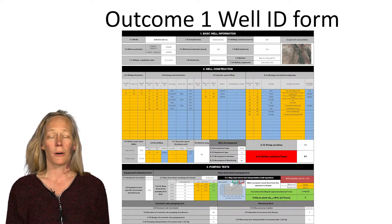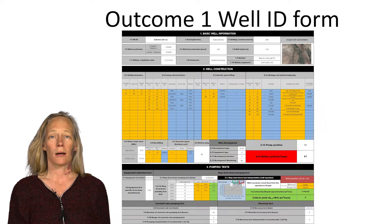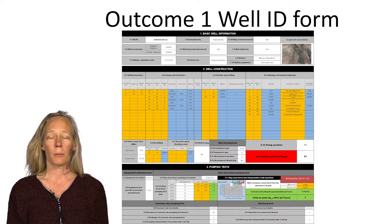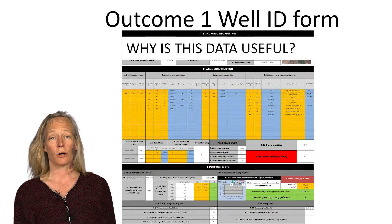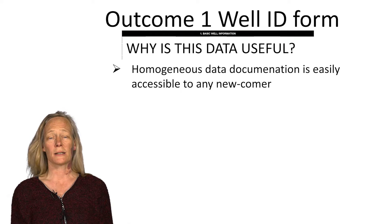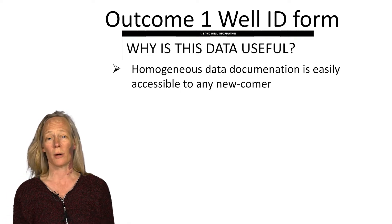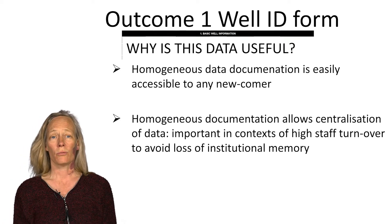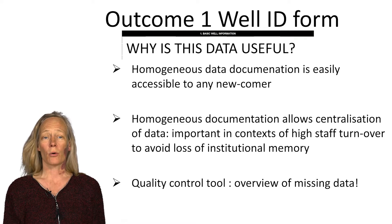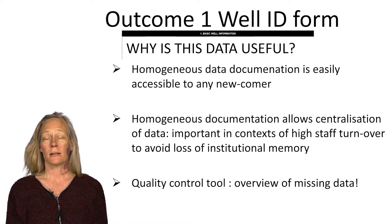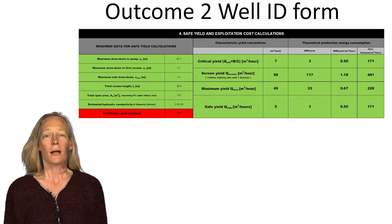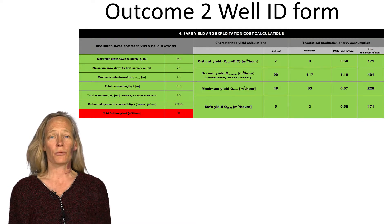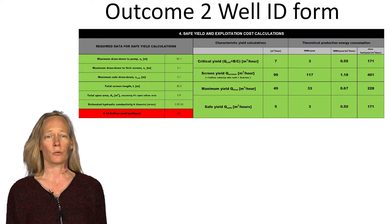We now get to the interesting part: the summary of the entire well ID form, consisting of the basic well information, the well construction data, and the pumping test data. This provides a homogeneous data documentation that is easily accessible to any newcomer and allows centralization of all the data. It is also a quality control tool that allows us to identify systematically missing data. Most importantly, all this data can be used to calculate the different yields needed to design the exploitation scheme of the well.